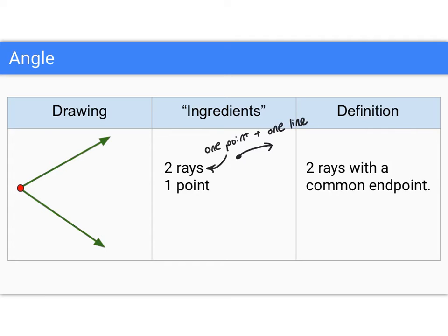Well, we have two of those now, and then we have a point, a common endpoint. So we're getting more complex here to put our angle together. And an angle is just two rays with a common endpoint.